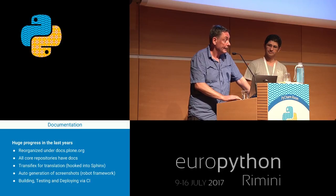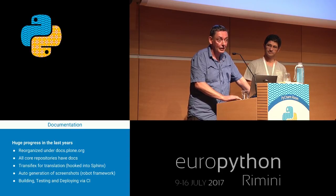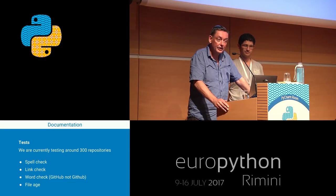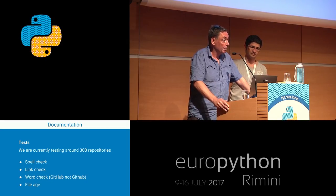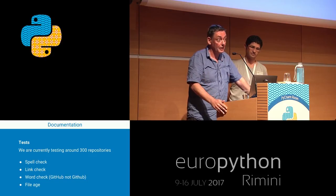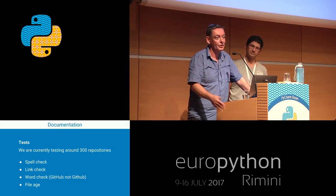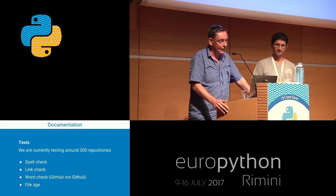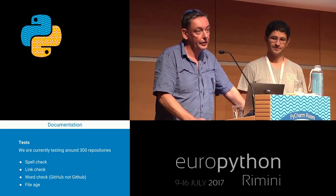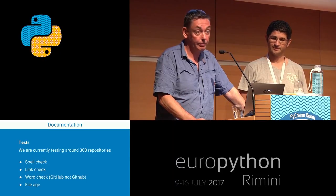It is a relatively new trend to treat your documentation as code that should be tested. We are using all kinds of Dockerized containers and hooks to automatically spell-check, link-check, use the right terminology, and check for file age. We get a ping if a file hasn't been touched for a year — it could just be perfect documentation, but it gives you a guide to check if it's still up to date.